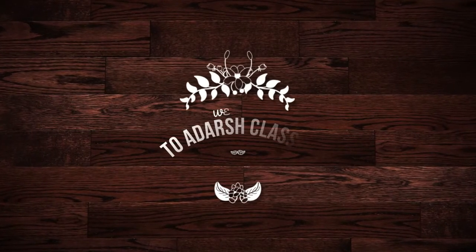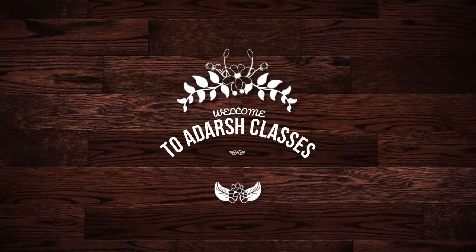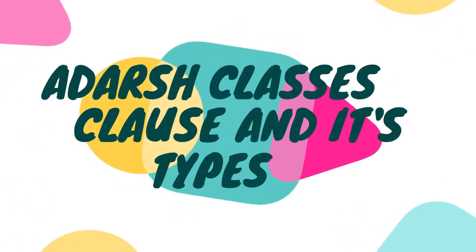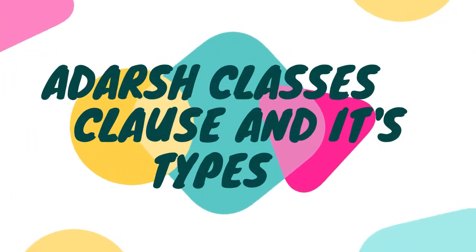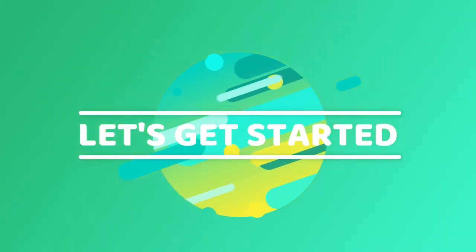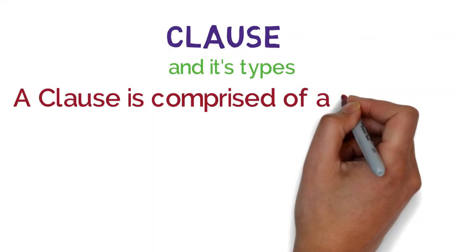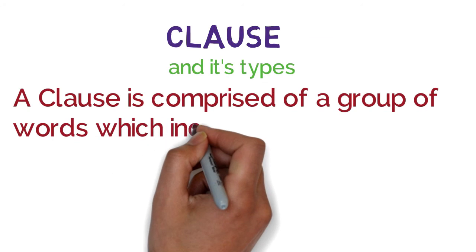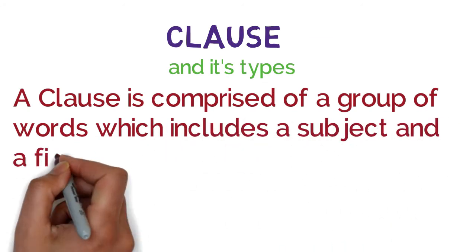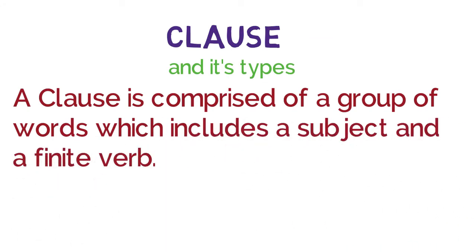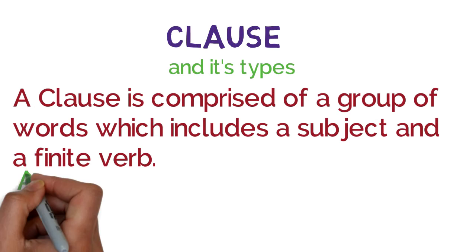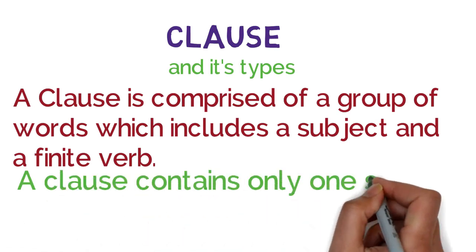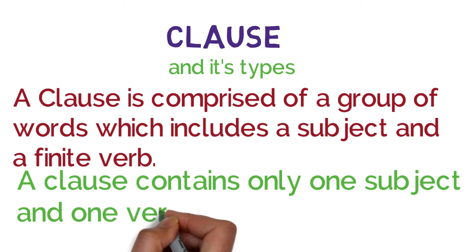Hello students, welcome to our classes. In this video we are going to discuss about clauses and their types. A clause is comprised of a group of words which includes a subject and a finite verb. A clause contains only one subject and one verb.